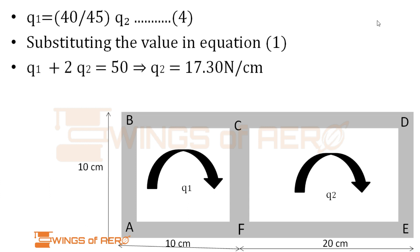Now recalling equation 1: q1 plus 2q2 equals 50. Substitute the value of equation 4 in equation 1, then we get q2 equals 17.3 Newton per centimeter. Substituting this value in the same equation to find q1, we get q1 equals 15.38 Newton per centimeter.